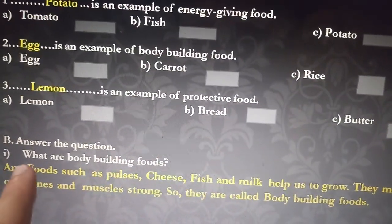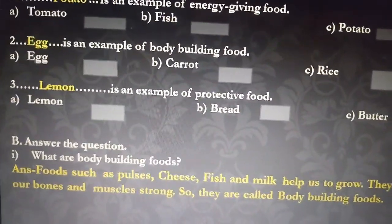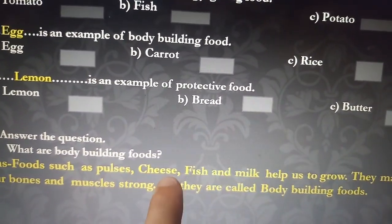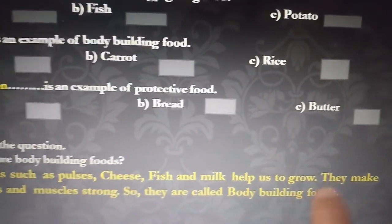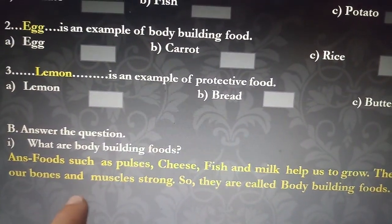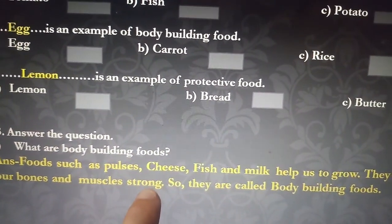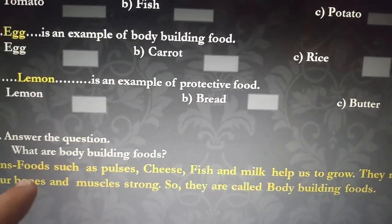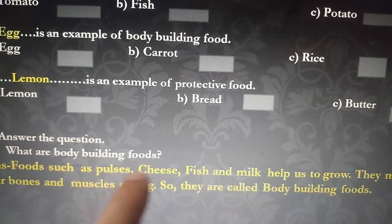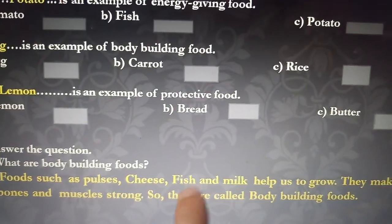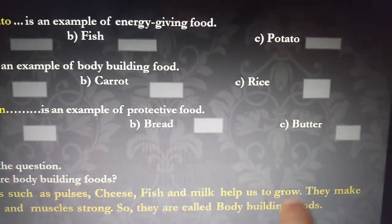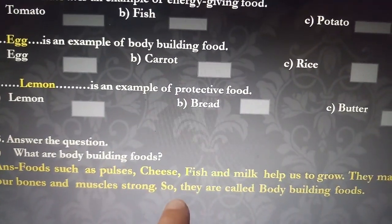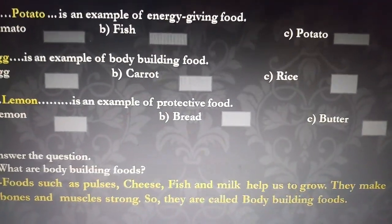Question B: Answer the question. What are body building foods? Foods such as pulses, cheese, fish, and milk help us to grow. They make our bones and muscles strong, so they are called body building foods.